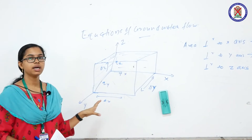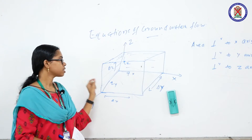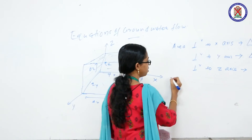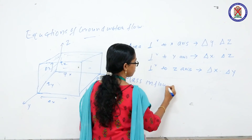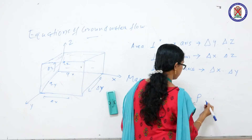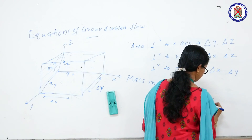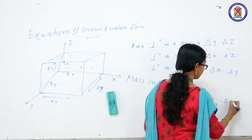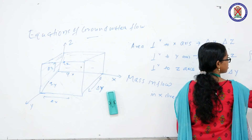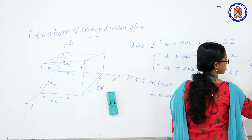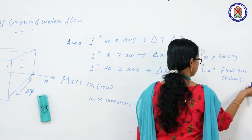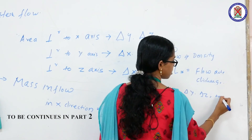Next, we consider the mass inflow into this particular aquifer. The mass inflow in the x direction is equal to rho_w times qx times delta y times delta z, where rho_w is the density, qx is the flow rate or discharge, and delta y times delta z represents the cross-sectional area.